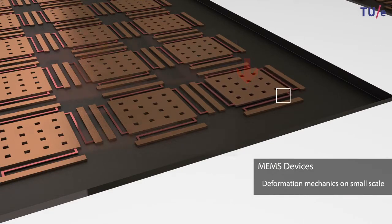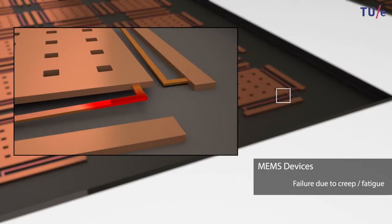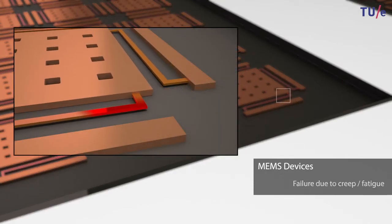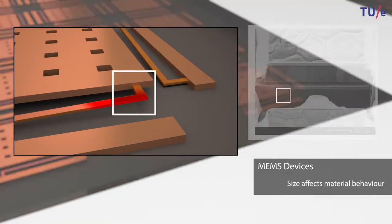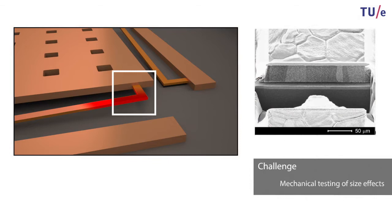Failure mechanisms, like creep and fatigue, exhibit different mechanical behavior when the internal microstructure length scale becomes comparable to its geometrical scale.